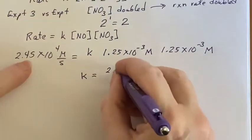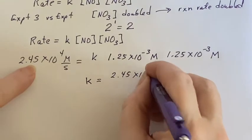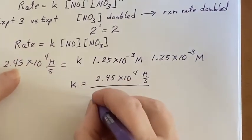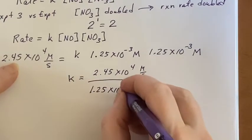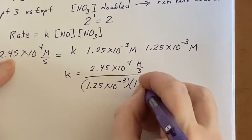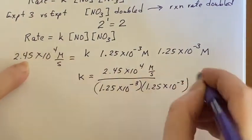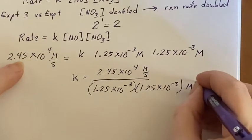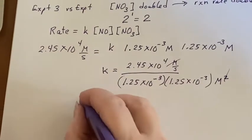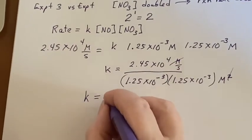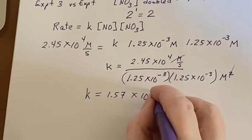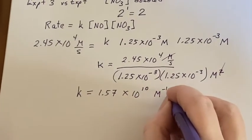So K will end up being 2.45 times 10 to the fourth molarity per second divided by both of these: 1.25 times 10 to the negative three and another 1.25 times 10 to the negative three, and then molarity squared. That will cancel one of them. I run it through the calculator and I'll come up that K is 1.57 times 10 to the tenth inverse molarity and inverse seconds.